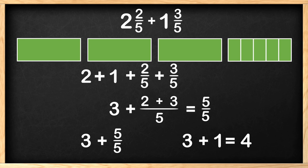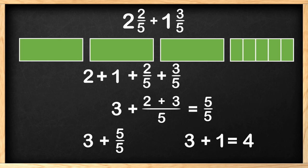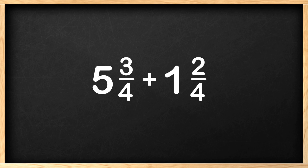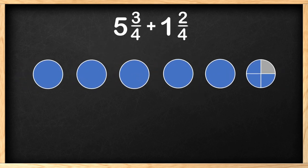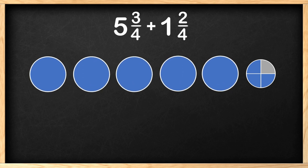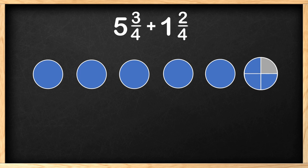Great! Let's add 5 and 3 fourths plus 1 and 2 fourths. We can use circles to represent these mixed numbers. 5 and 3 fourths can be modeled with 5 whole circles and 1 circle with 3 of 4 equal pieces shaded. That is cool!